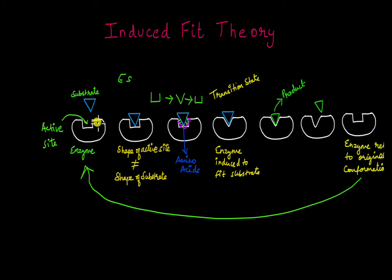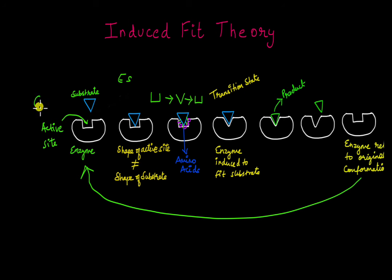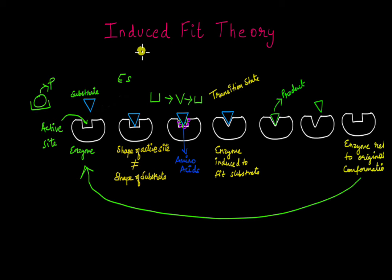So two of the limitations of the lock and key model are explained perfectly by the induced fit theory: the conformational change, where the substrate binding causes a change in enzyme shape, and the formation of the transition state as the enzyme is induced to fit the substrate. What about the presence of more than one substrate? That is also explained by the induced fit theory. After the enzyme returns to its original conformation, it is free to bind another substrate of a different shape. That substrate will come and bind to the active site, and the enzyme will again undergo a conformational change, converting that substrate into a product as well.